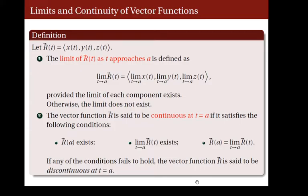Now, the vector function r is said to be continuous at the point t equals a if the following three conditions are satisfied. First, the vector-valued function r evaluated at a should exist. And the limit of r as t approaches a is also existent. And moreover, r evaluated at a should agree with the limit of r as t approaches a. If one of these three conditions is not satisfied, then we say that the vector function r is discontinuous at the point t equals a.